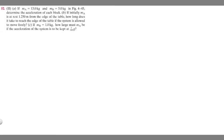In this problem, we're told if m sub a equals 13 kg and m sub b is equal to 5 kg, determine the acceleration of each block. If initially m sub a is at rest 1.250 meters from the edge of the table, how long does it take to reach the edge of the table if the system is allowed to move freely? And if m sub b equals 1 kg, how large must m sub a be if the acceleration of the system is to be kept at 1/100th of g.